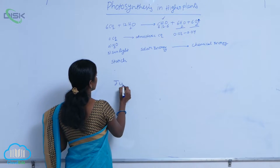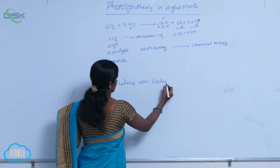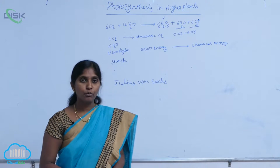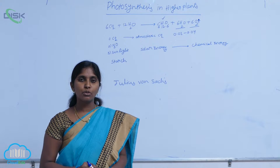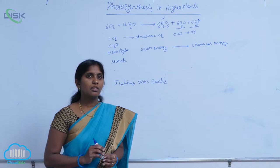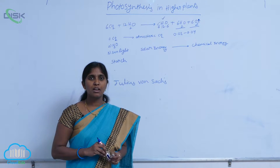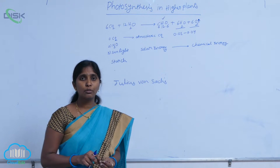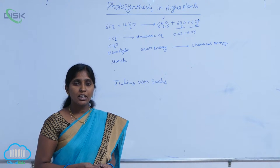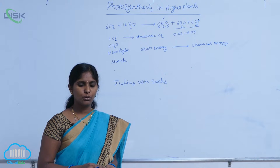Julius von Sachs conducted the experiment and provided evidence for production of glucose during photosynthesis. The glucose is synthesized where the green particles are present, where the chlorophyll is present, where the glucose is produced. He gave the evidence that chlorophyll is most important for photosynthesis.